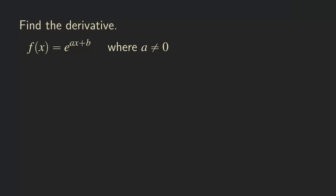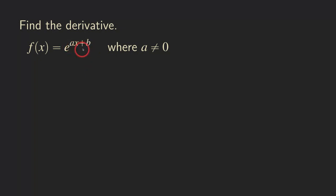What we want to talk about here is finding the derivative of an exponential function. In order for this to be an exponential function, we require a, the coefficient of x, to be non-zero. We are also going to assume that a and b are real numbers.